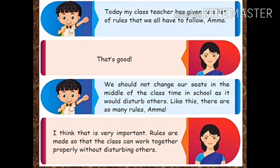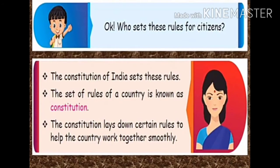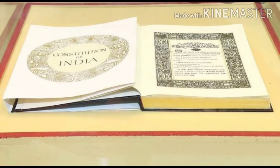Ramiz says: I understand. Our teachers said the same. You know, there are rules that all citizens of the country have to follow. Ramiz asks: Citizens? What does that mean, Amma? Mother explains: A citizen is a person who is a member of a country. A citizen enjoys the rights given to him or her by the country. If you are a member of a country, you are a citizen of that country. A citizen has some rights because he is born in a particular country and living there. The Constitution of India sets these rules. The set of rules of a country is known as the Constitution.